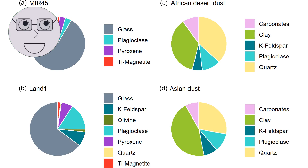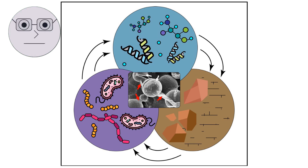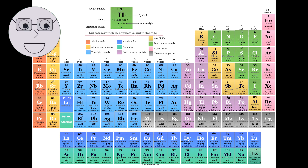The chemical composition of minerals also plays a crucial role in their properties. Let's take a closer look at the chemistry of minerals. Minerals are made up of chemical elements, which are the basic units of matter. There are over 100 different elements, and each element has its own unique properties.